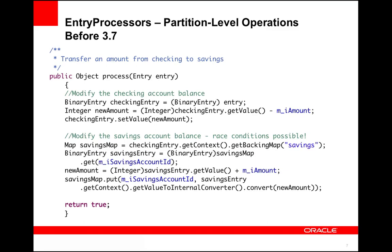In this code example, we're doing a very basic transfer from checking to savings in the context of a single entry processor by using the getBackingMap method. The subtraction from the checking account is safe because the entry processor is holding a lock for the checking account. To get the savings account, we go through the backing map manager context to get the backing map for the savings account on this member. We then look up the appropriate account to add the amount. The savings account is being modified by direct access to the backing map. The key is not locked in this context, and therefore other operations against the same savings account could interleave, leading to unintended race conditions. In addition, you'll notice that we have to take on the work of serializing the new value as well, because objects stored in a backing map are stored in their binary form.